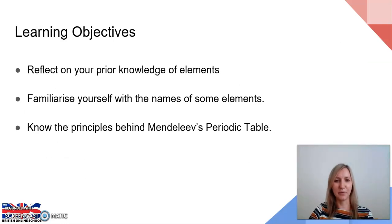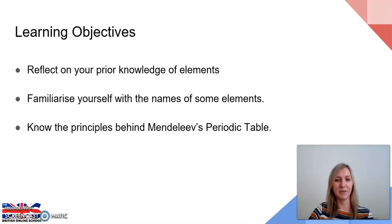Now that we've familiarised ourselves with the names of the elements, it's time to have a look at today's learning objectives. First, we're going to be reflecting back on previous lessons this year and in Year 7, understanding our knowledge of the elements. We'll be familiarising ourselves with the names of the elements, using the periodic table to look those up, and also the symbols that correspond to each of the names. And then finally, we'll be looking at the principles behind Mendeleev's periodic table — a little bit about who Mendeleev was and why his work was so fundamental to the construction of the modern periodic table as we know it.